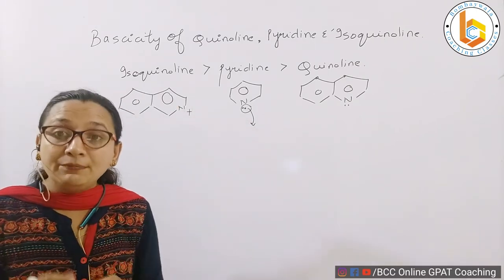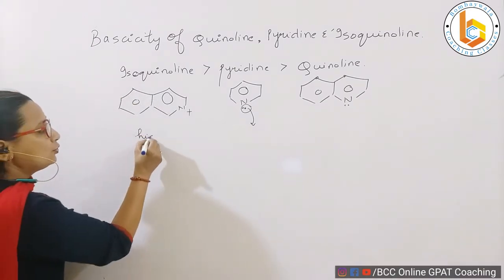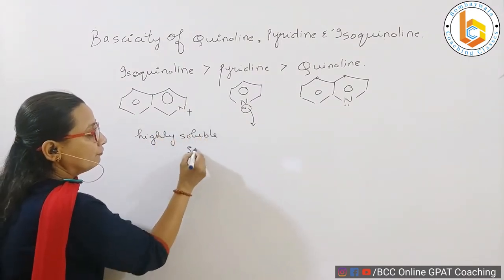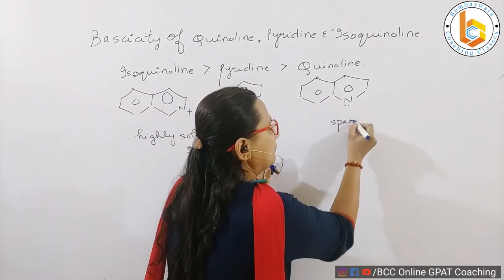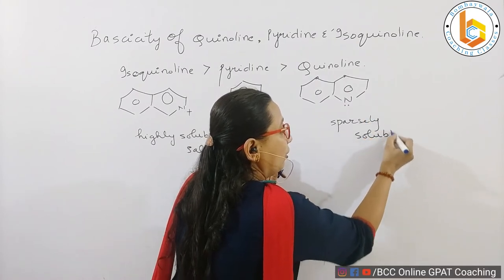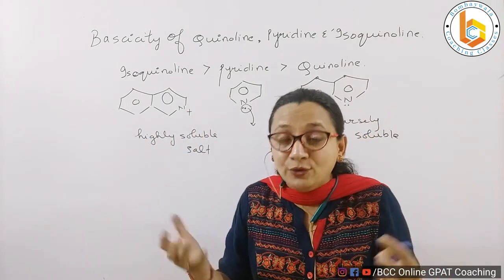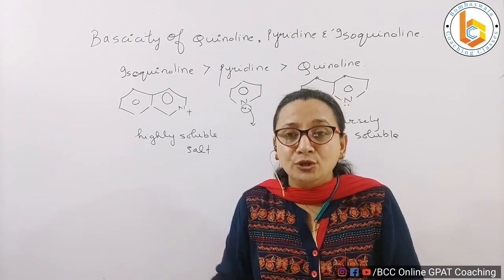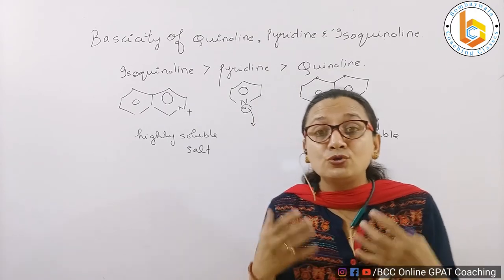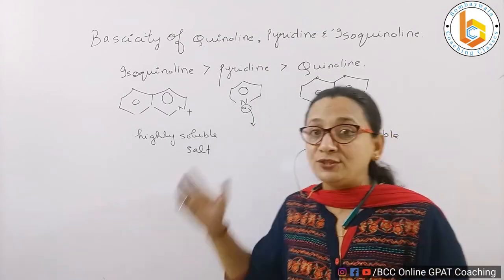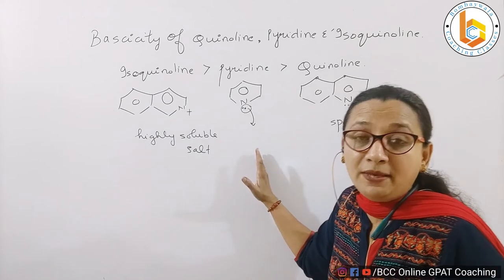When isoquinoline forms a salt, it forms highly soluble salts, whereas the salts that quinoline forms are only sparsely soluble. Because the salts of isoquinoline are water-soluble, this makes isoquinoline a stronger base than pyridine, which in turn is a stronger base than quinoline.